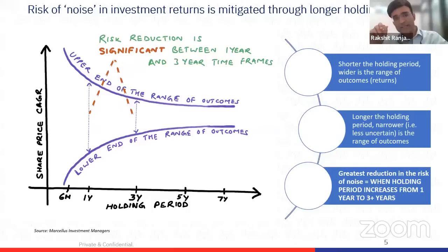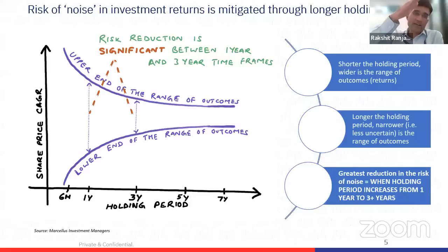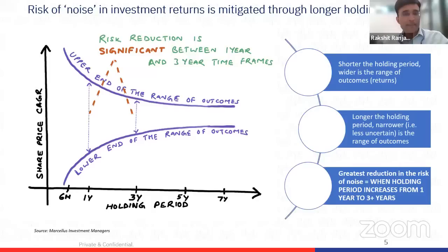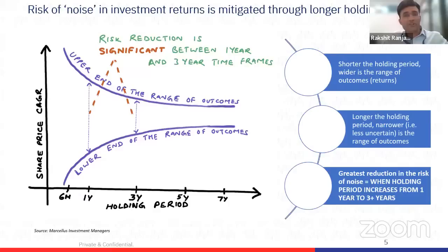What is quite remarkable is that the biggest reduction in the gap between the upper and lower end of the range of outcomes doesn't happen before one year or after three years. One thing common across all types of assets — Nifty 50, Sensex, CCP — is that the degree of noise is reduced to the greatest extent if you elongate your holding period from one year to around three years. That is a very important and interesting shift in timeframe worth bearing in mind.